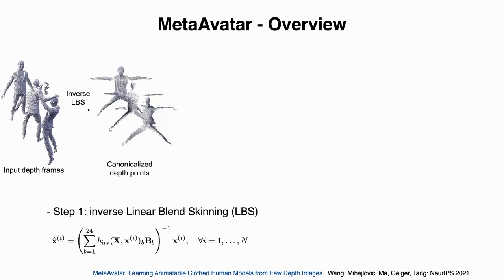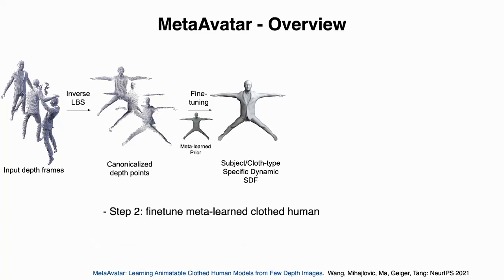We start by describing the overall pipeline of MetaAvatar. Given depth frames of a subject and their corresponding underlying pose and shape estimation, we first canonicalize the input points using learned inverse LBS functions. LBS is a standard graphics technique, and the difference here is the skinning weights are learned. Then, we use the canonicalized depth points as fine-tuning data to fine-tune our meta-learned prior.